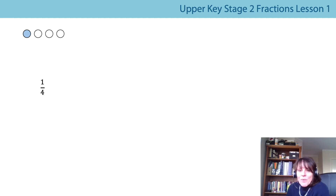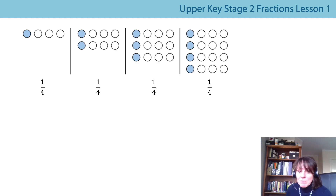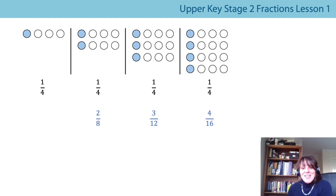We could also look at it with a different representation. Here we've got circles where a quarter has been shaded blue, but we could say this in different ways. Pause the video and have a go at writing the fractions that are the same using these three different pictures of circles shaded in blue. One quarter, two eighths, three twelfths, and four sixteenths. Hopefully that's what you've recorded — they all represent the same part of the whole being shaded in blue.